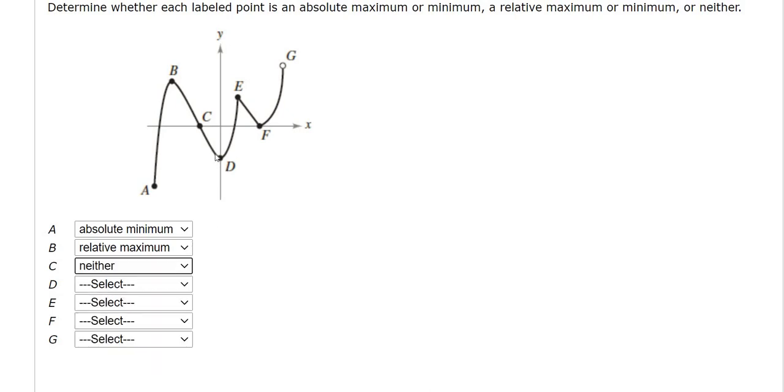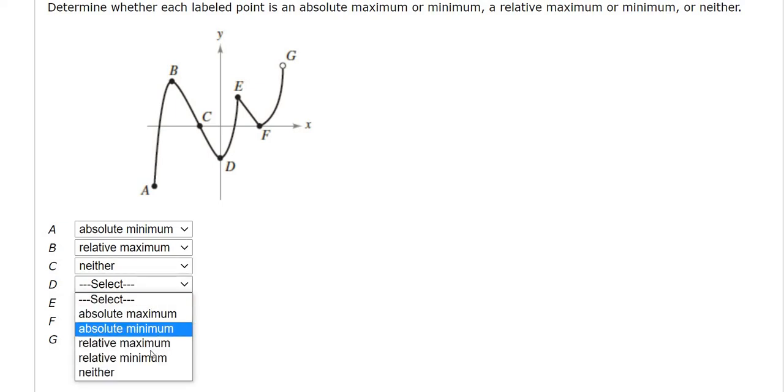D is a relative minimum. Relative to the points around it, it's the smallest one, so it'll be relative minimum.